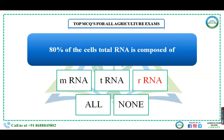Now, 80% of the cell's total RNA is composed of which type? The answer is rRNA, that is ribosomal RNA. It constitutes 80% of the total RNA present in the cell. Two important points: first, rRNA is the most stable form of RNA; second, it is found in ribosomes but is produced in the nucleolus.